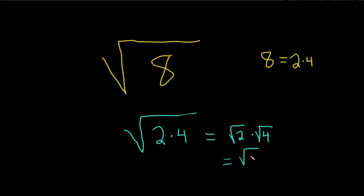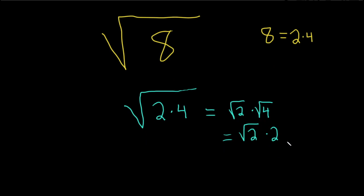So this is the square root of 2 times 2. Now, it's really better practice to put this number in the front. So you want to put this in front of the square root.